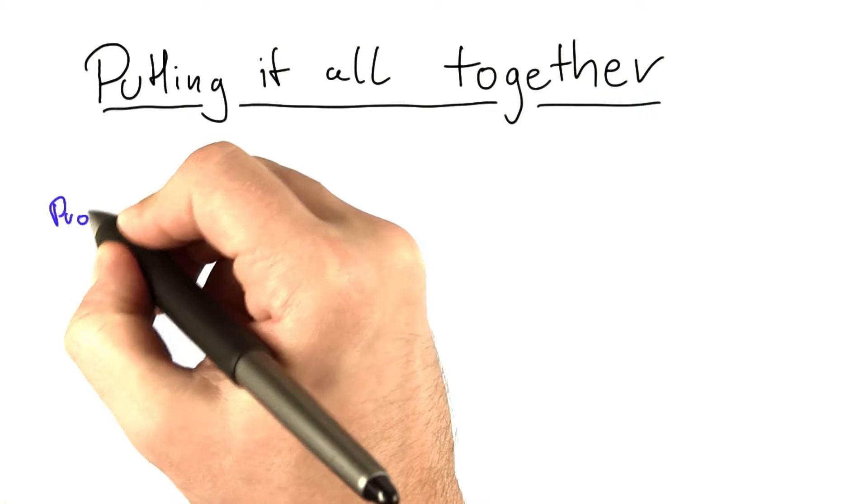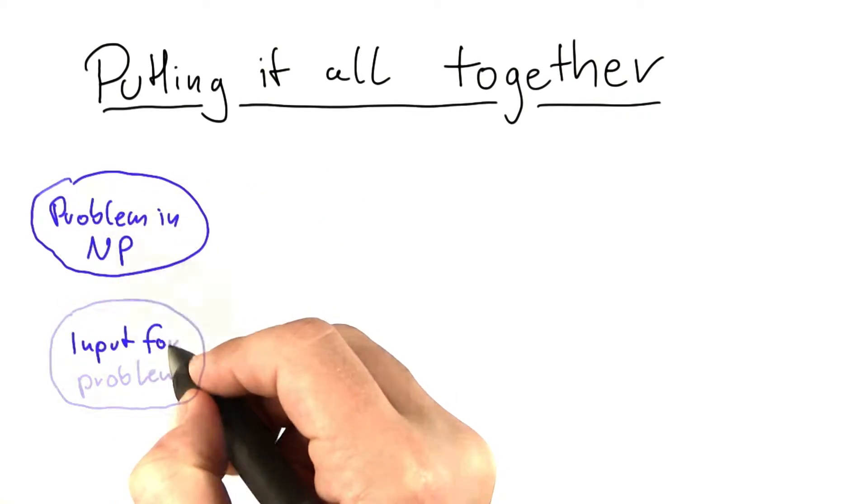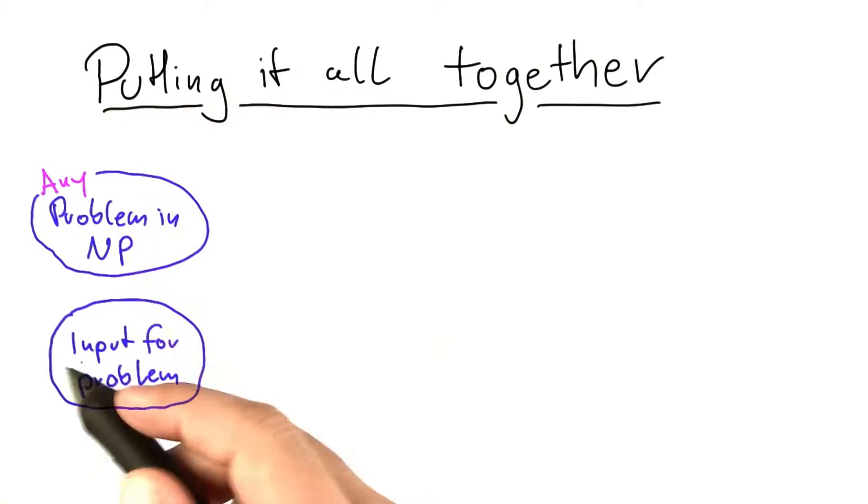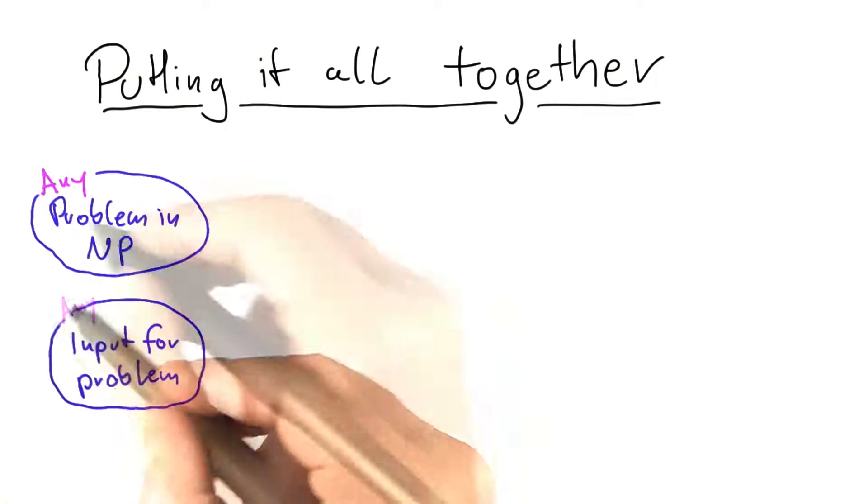So we started out with a problem in NP and an input for that problem. This here can be any problem in NP and this here can be any input for that problem. And what did we then do?